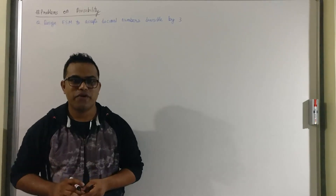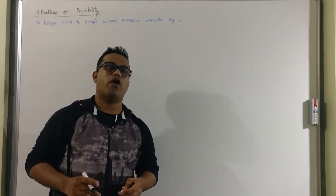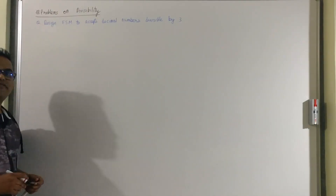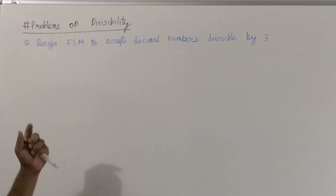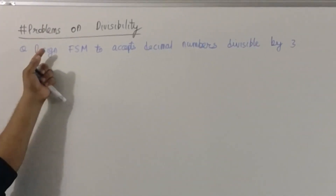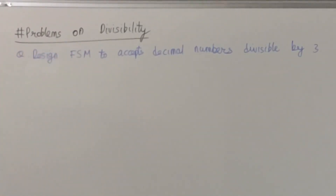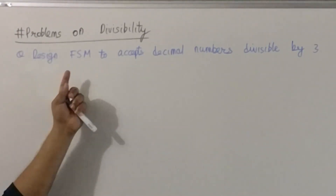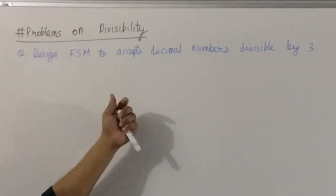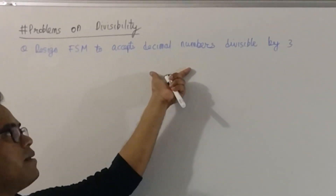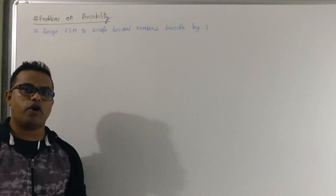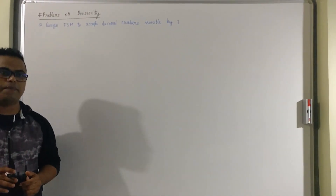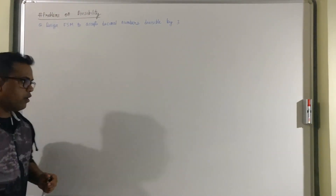Hello friends, today we are going to see a few problems on designing finite state machines, and I am going to cover some problems on divisibility. So let's go with the first design problem. I need to design a finite state machine which will accept a decimal number divisible by 3. To solve any kind of finite state machine problem, I am going to follow 4 steps.